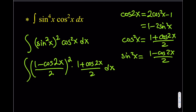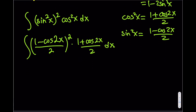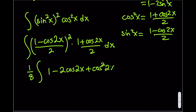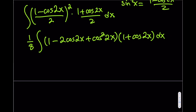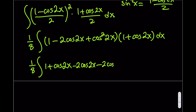We want to distribute everything and simplify before choosing u. Squaring the numerator gives a factor of 1/8 outside. The expanded numerator is (1 minus 2cos(2x) plus cos²(2x)) multiplied by (1 + cos(2x)). Distributing gives: 1 + cos(2x) minus 2cos(2x) minus 2cos²(2x) plus cos²(2x) plus cos³(2x) dx.